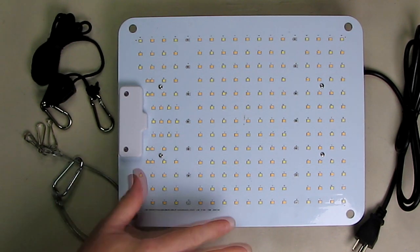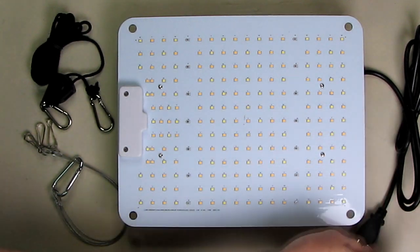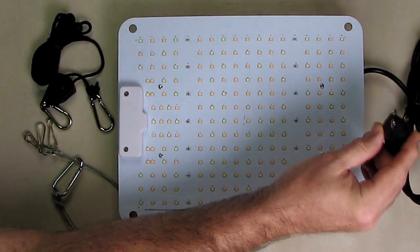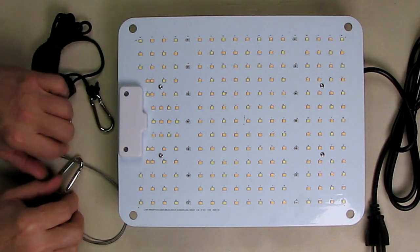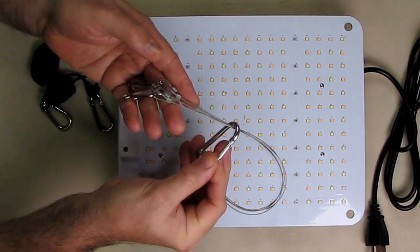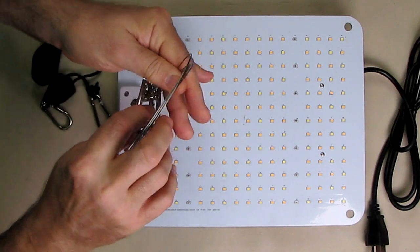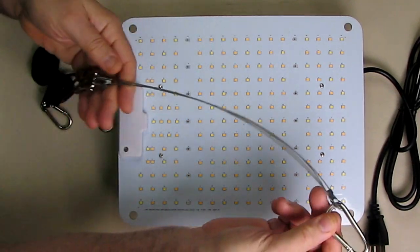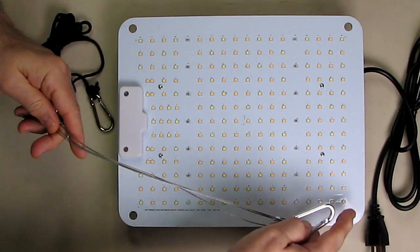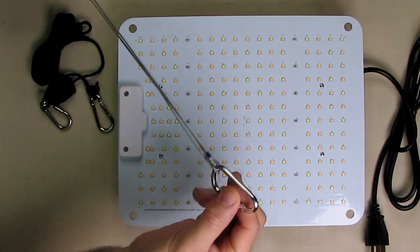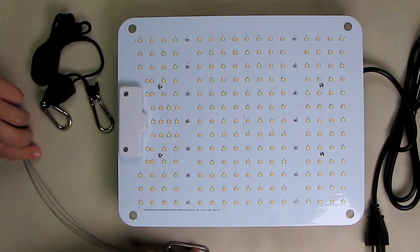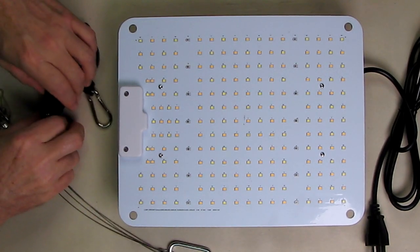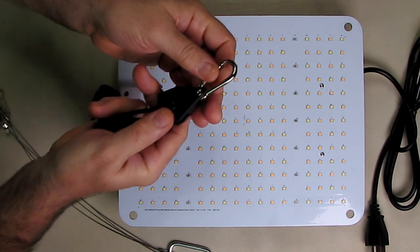So let's take a look at what you get. You have the light itself with a nice long cord and a US plug on there with a ground. It's important to use that ground. And then we have the stainless steel connecting cables for them. They're going to go into the corners.